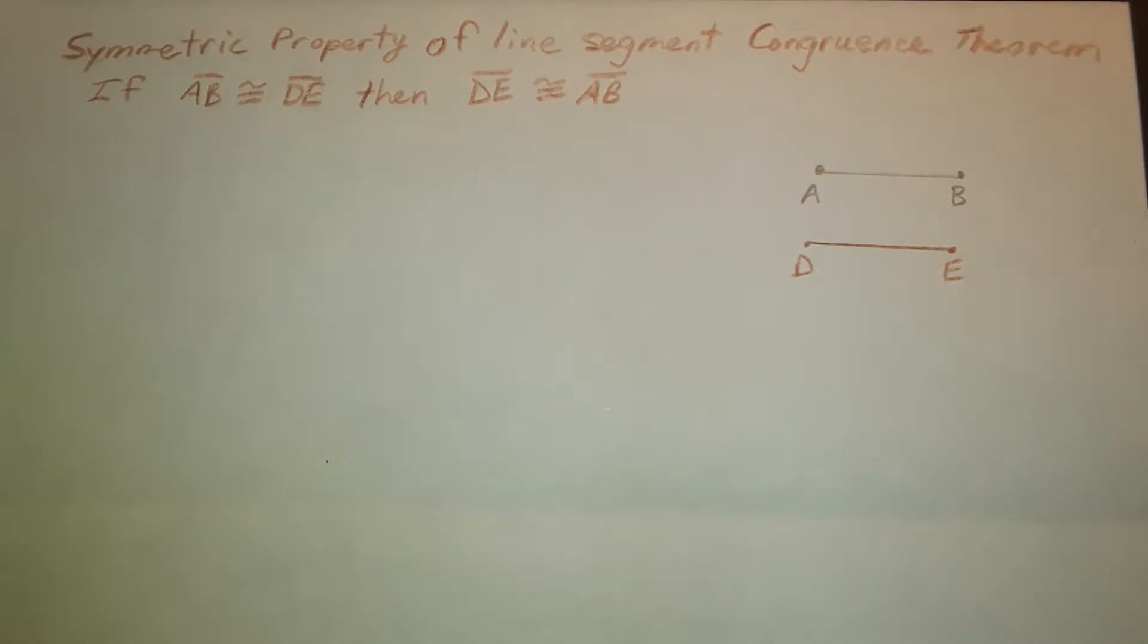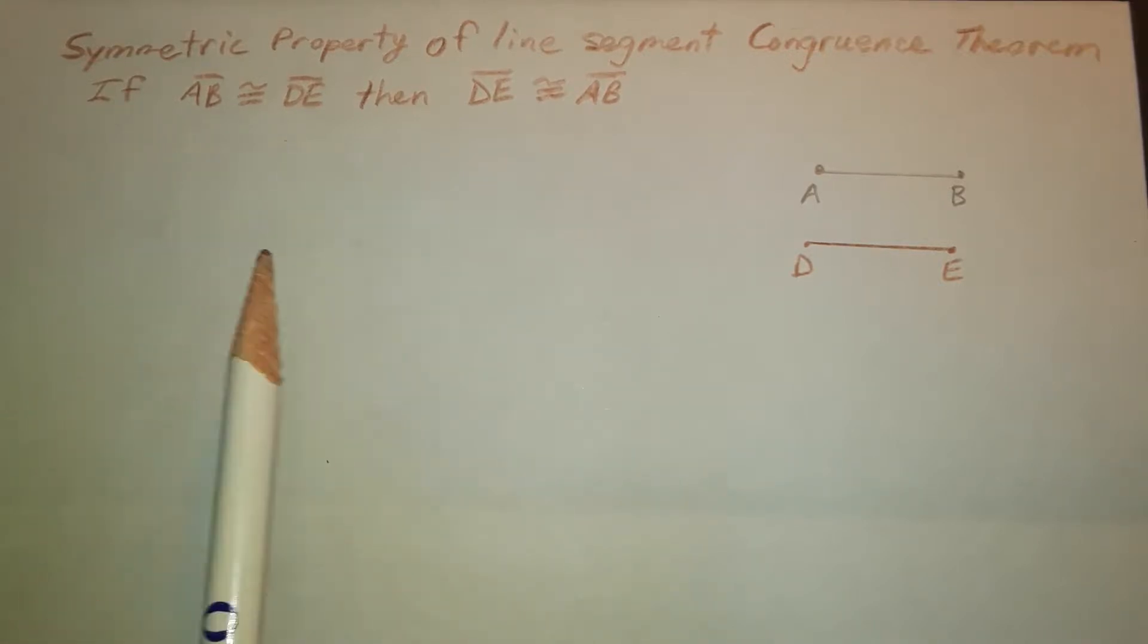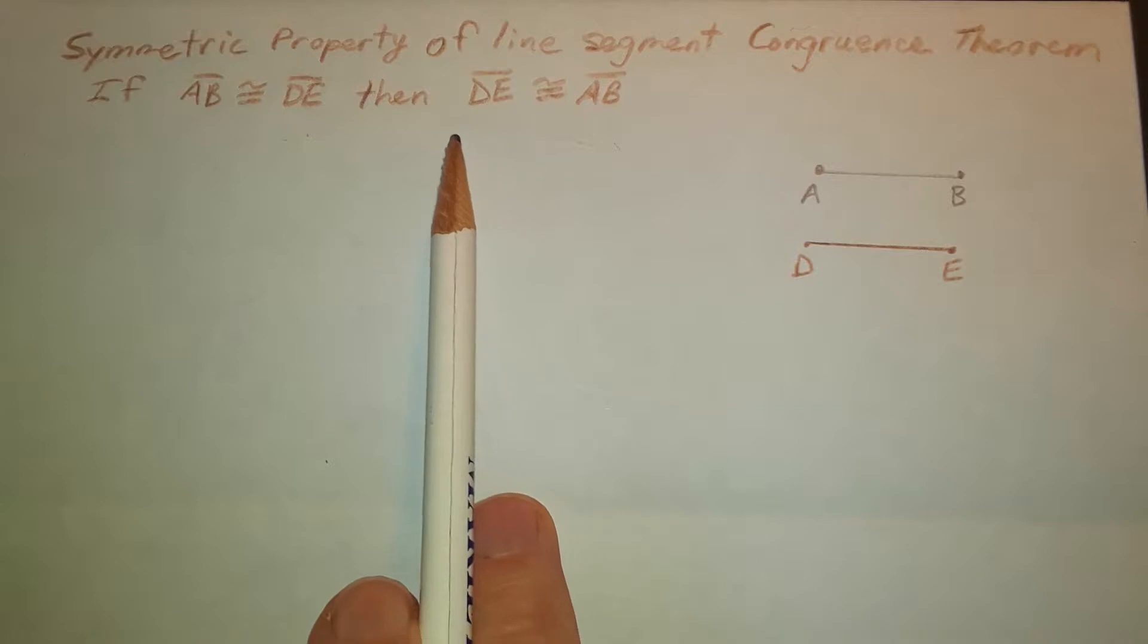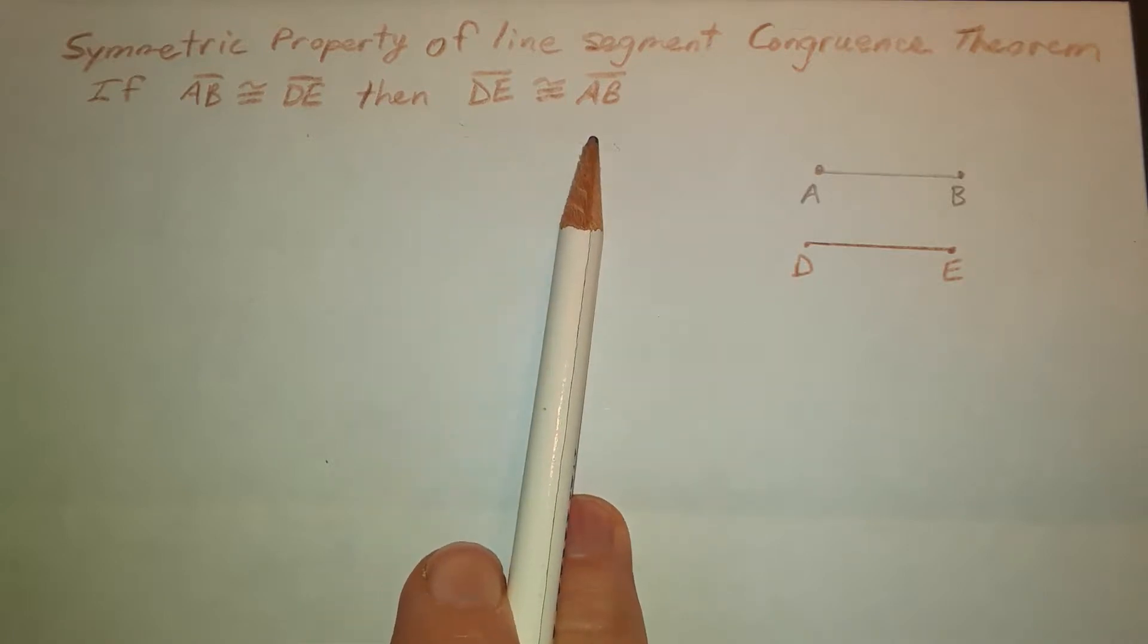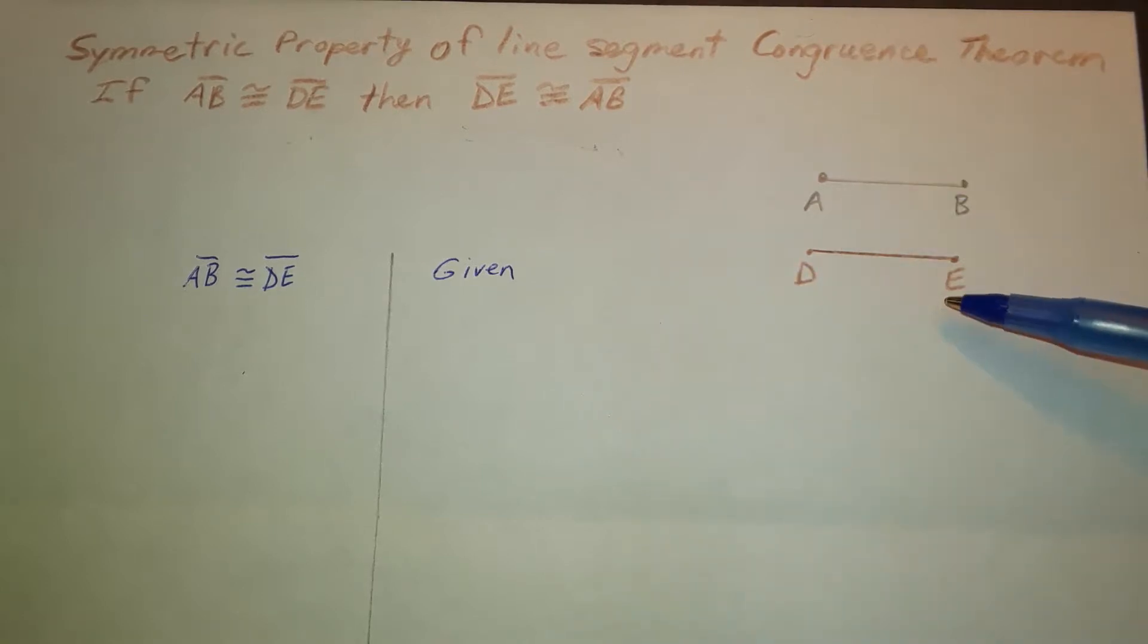So I need to come up with a plan on how I want to make this proof flow. And this is kind of like writing an outline when you're in a literature class. So somehow I need to start a logical flow that begins with this statement and then ends with this statement. So this is going to be what we call my given, and this will be what we call my conclusion.